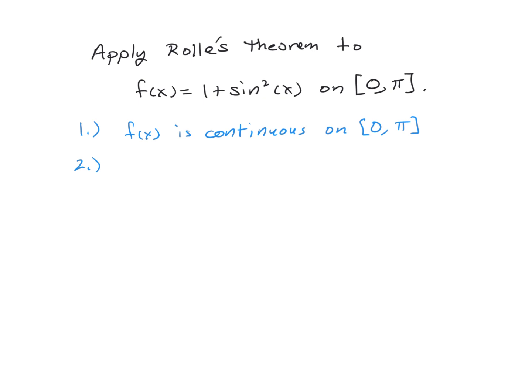Next thing to do is look at differentiability, and to do that, we need to find the derivative of this function so we can study it. Well, the derivative of 1 is 0, and then the derivative of sine squared is 2 times the sine of x times the cosine of x using the chain rule.